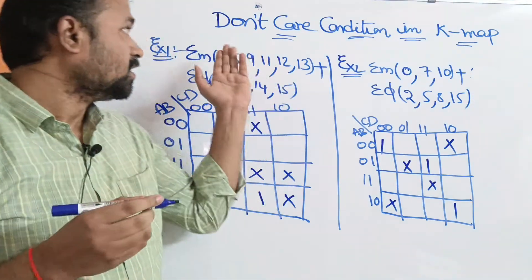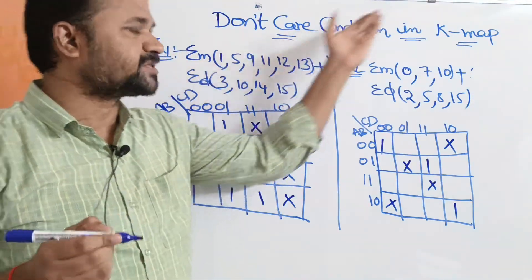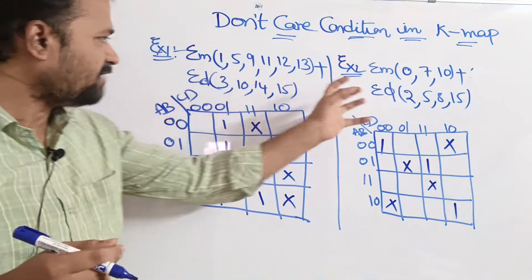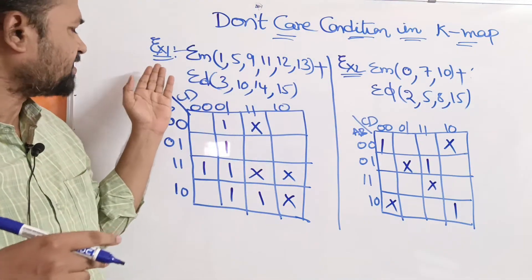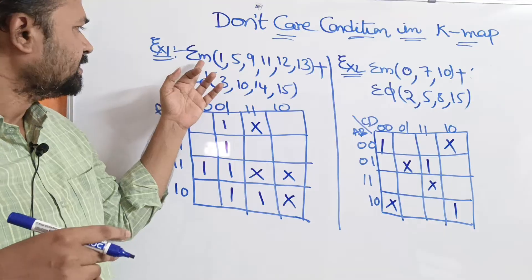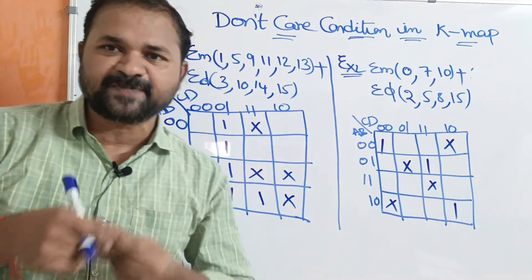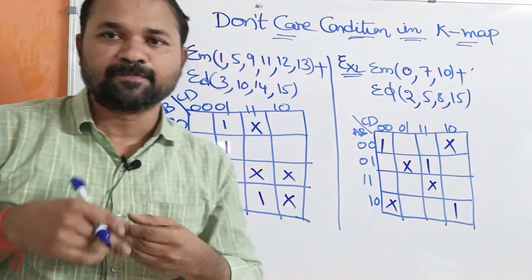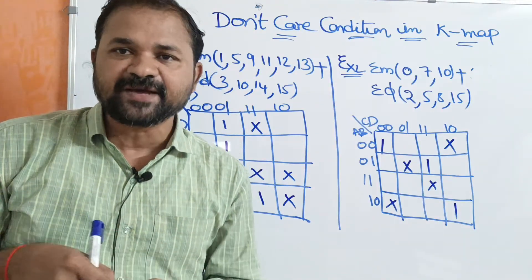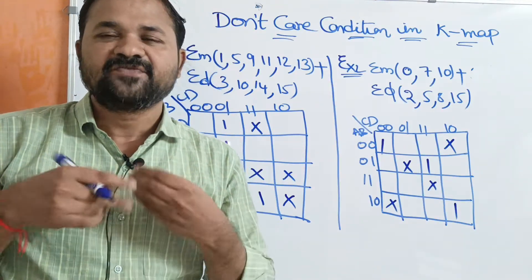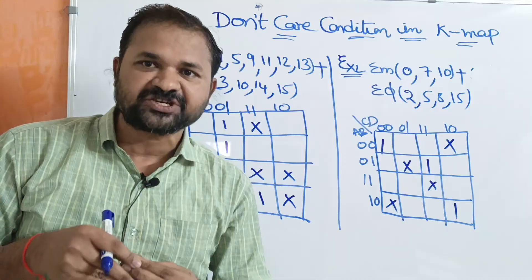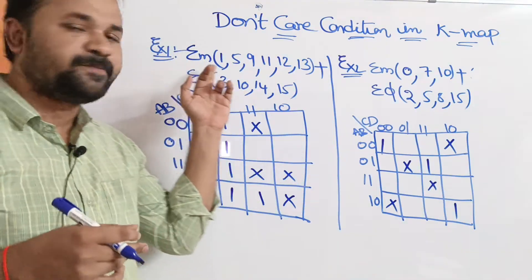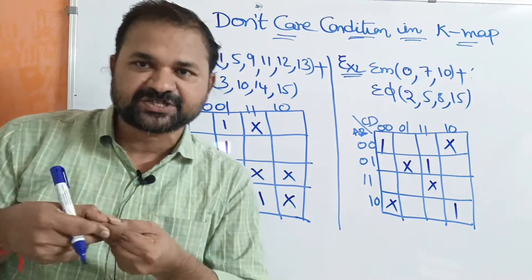Let us discuss how to use don't care conditions in Karnaugh map. We have two examples. Sigma M: sigma specifies the sum operation, and M means minterm, so minterm means we need to perform product operation on the literals or variables. So sigma M means sum of products.